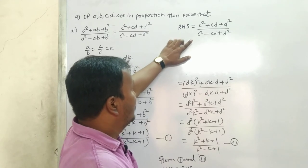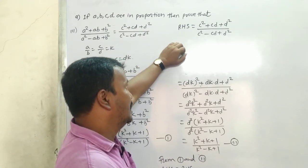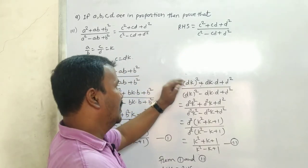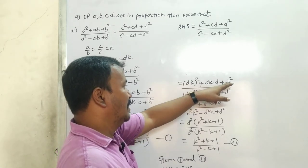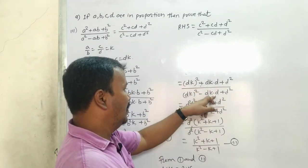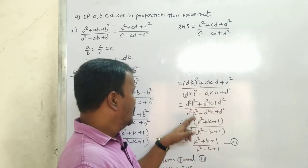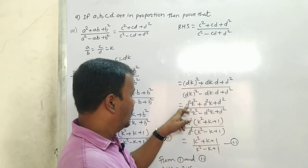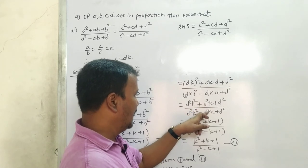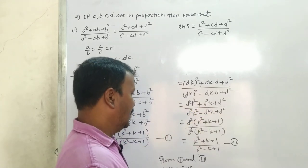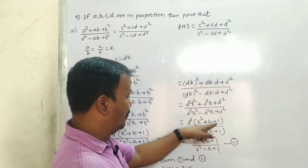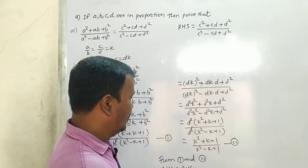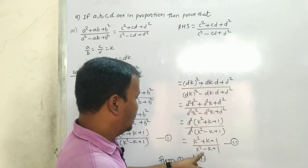For RHS: (c² + cd + d²) / (c² - cd + d²). Since c = dk, substituting: (dk)²+ (dk)·d + d²) / ((dk)² - (dk)·d + d²) = (d²k² + d²k + d²) / (d²k² - d²k + d²). Taking d² common: d²(k² + k + 1) / d²(k² - k + 1). d² cancels, leaving (k² + k + 1) / (k² - k + 1).